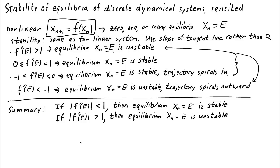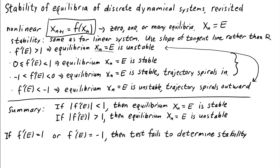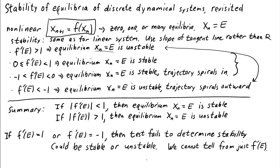Of course, we've excluded one case: what happens if f'(e) equals 1, or f'(e) equals negative 1? If this happens, then the test fails — we don't have enough information to tell if the equilibrium is stable or unstable. There are methods to figure this out, but we're not going to worry about them. If we find that the derivative is 1 or negative 1, we'll just conclude that we don't know if the equilibrium is stable or unstable.